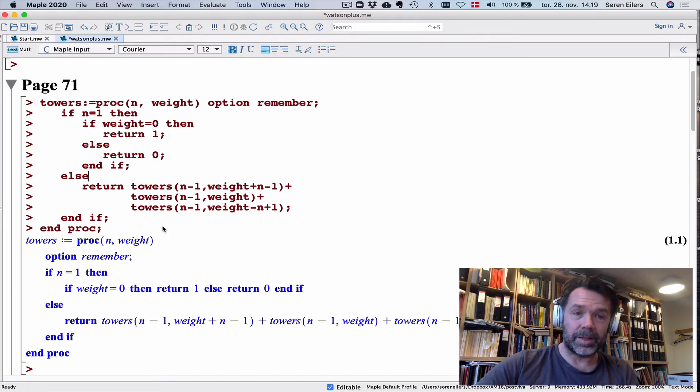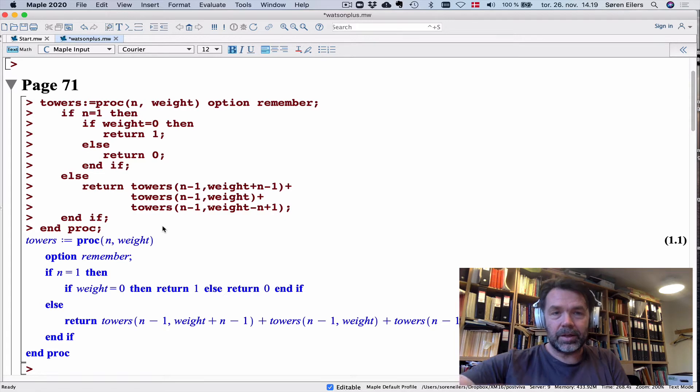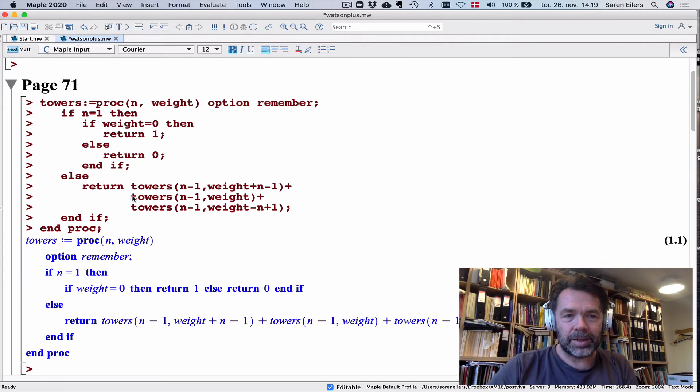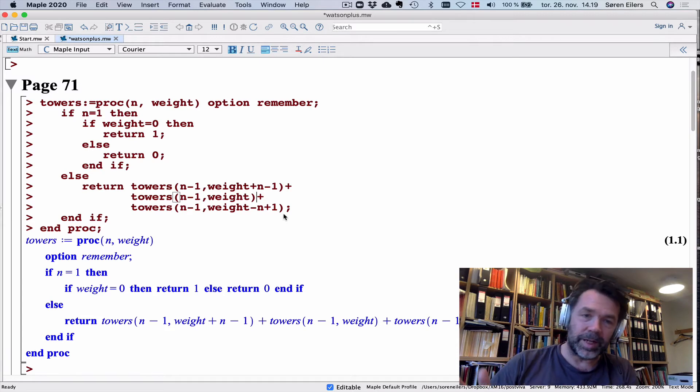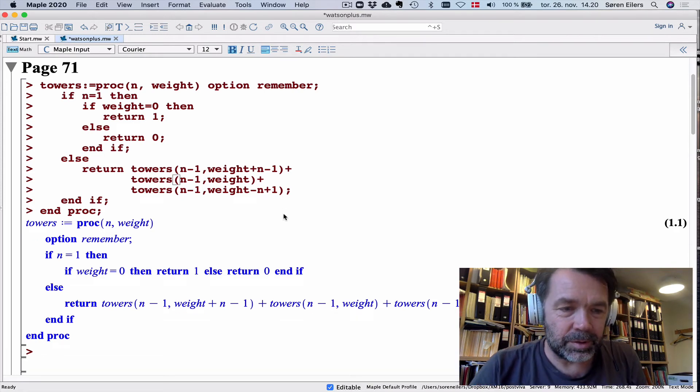The point is, if I know how many buildings have a certain weight with n-1 bricks and I want to know how many buildings have a certain weight with n bricks, then I just take the building and put it in the three possible positions. If I put in the middle position, I get the situation here. If I put it one to the left or one to the right, I should add or subtract n-1, because the building I'm putting has n-1 bricks on it. All these bricks have been moved once to the left, so that moves the weight n-1 times one to the left. This is the recursive procedure.